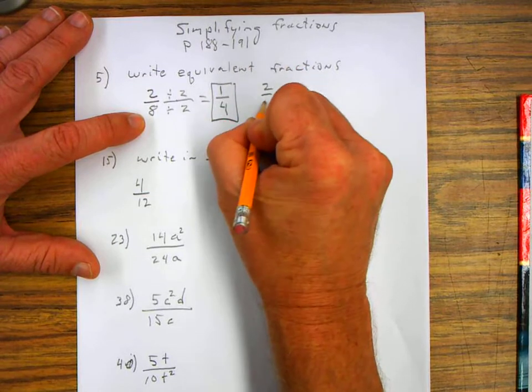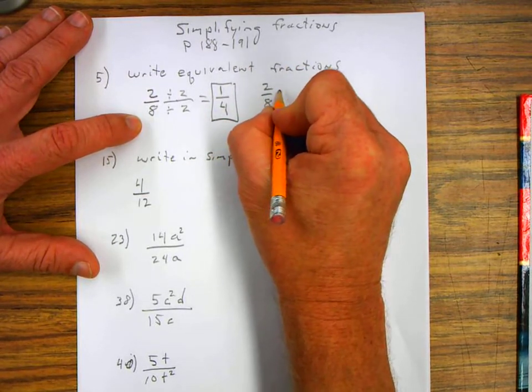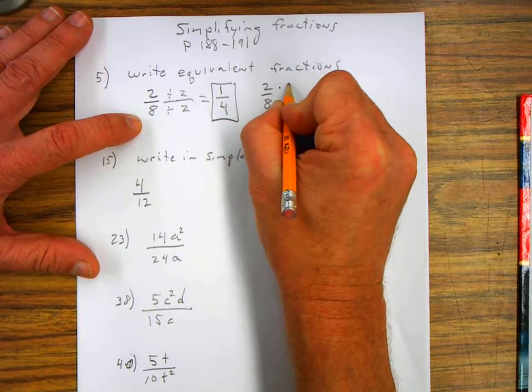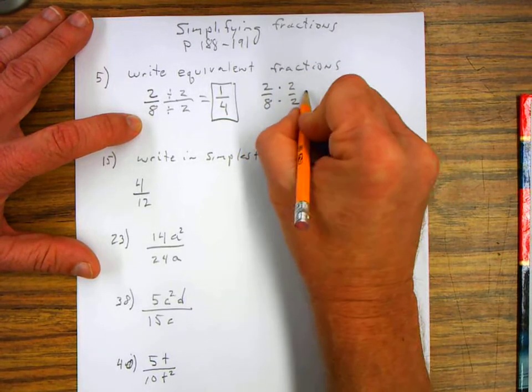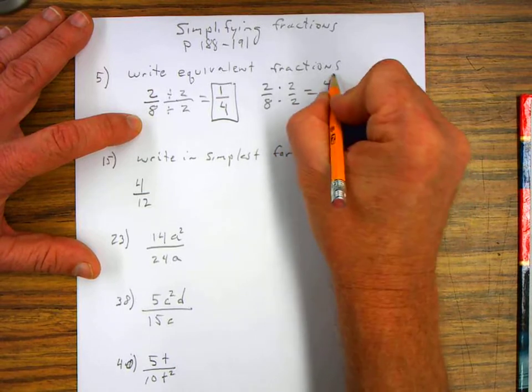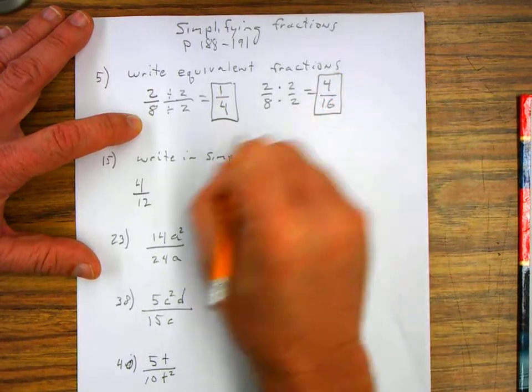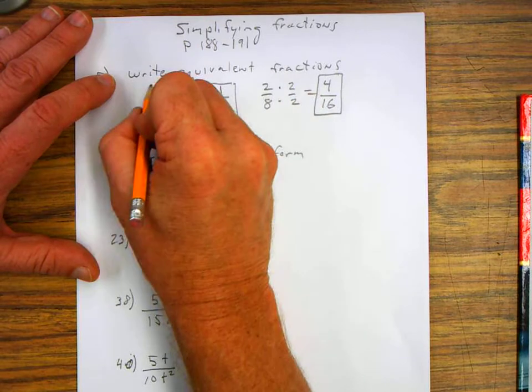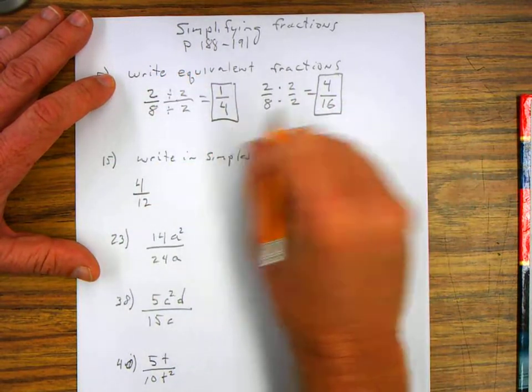Okay, and then I can write another equivalent fraction by multiplying the top and the bottom by two over two. Two times two is four. Eight times two is sixteen. That's our second equivalent fraction. So there's a couple equivalent fractions: two over eight, one over four, and four over sixteen.